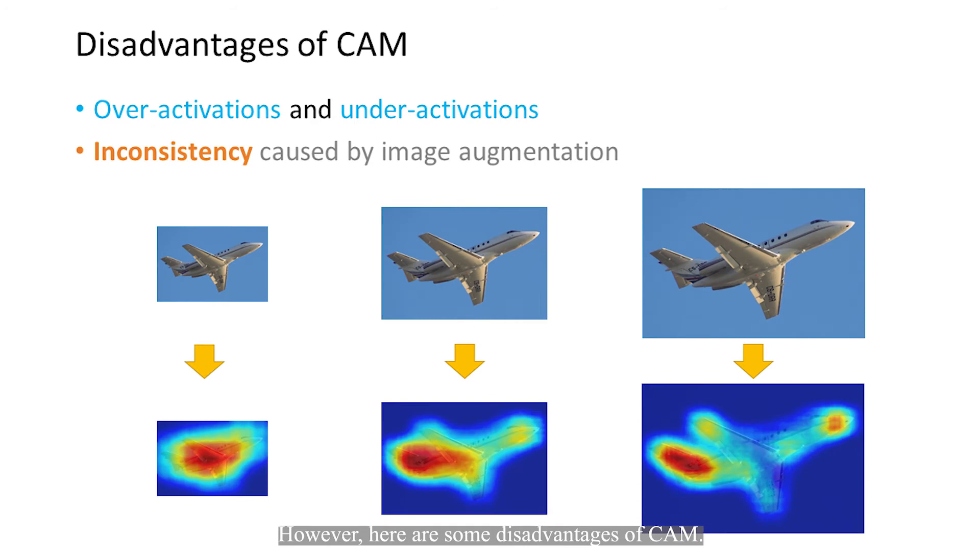However, here are some disadvantages of CAM. Firstly, CAMs always activate at the most discriminated regions of objects, and lots of pixels are incorrectly activated around the object boundary.